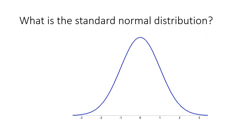So what is the standard normal distribution? The standard normal distribution is a special type of normal distribution that has a mean of 0 and a standard deviation of 1. Because of this, the standard normal distribution is always centered at 0 and has intervals that increase by 1.